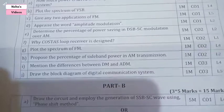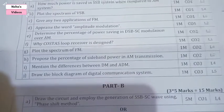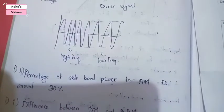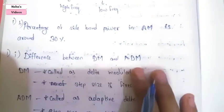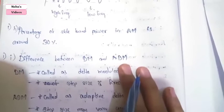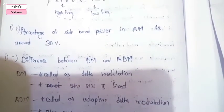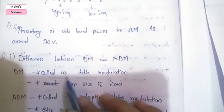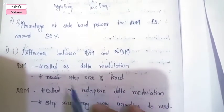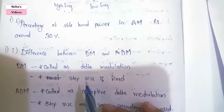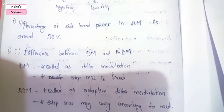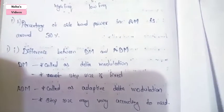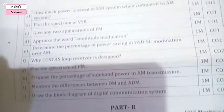The second-to-last question asks to mention the differences between DM and ADM. DM means delta modulation and ADM means adaptive delta modulation. In DM the step size is fixed, and in ADM the step size may vary according to the need of the message signal.